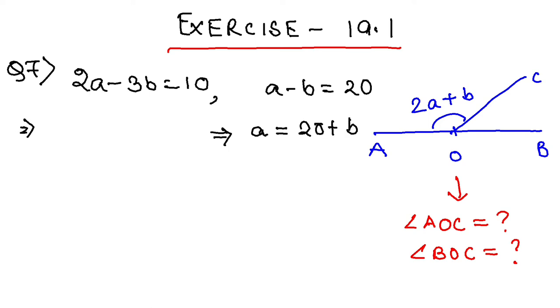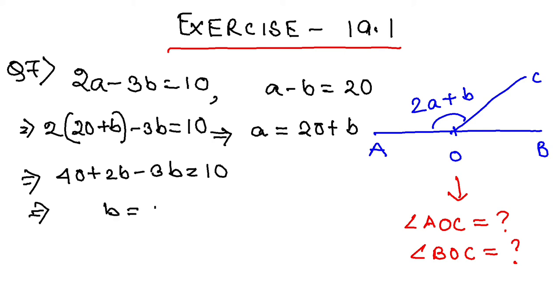Returning to the first equation, I'll substitute a with 20 plus b. So 2 times (20 plus b) minus 3b equals 10, which gives 40 plus 2b minus 3b equals 10. Solving this, we get b equals 30.